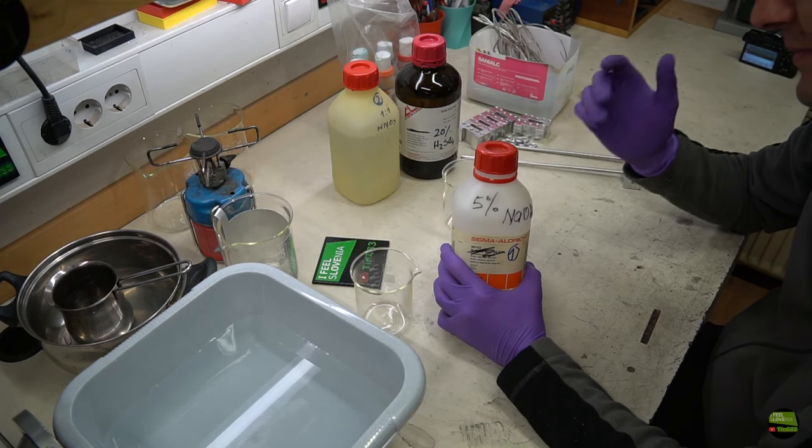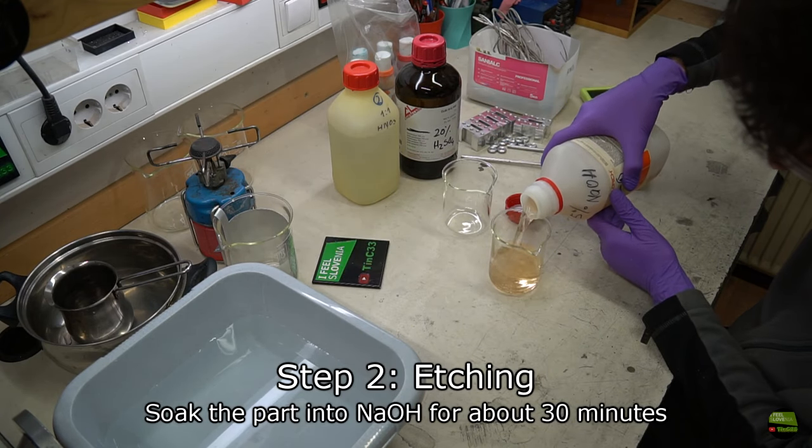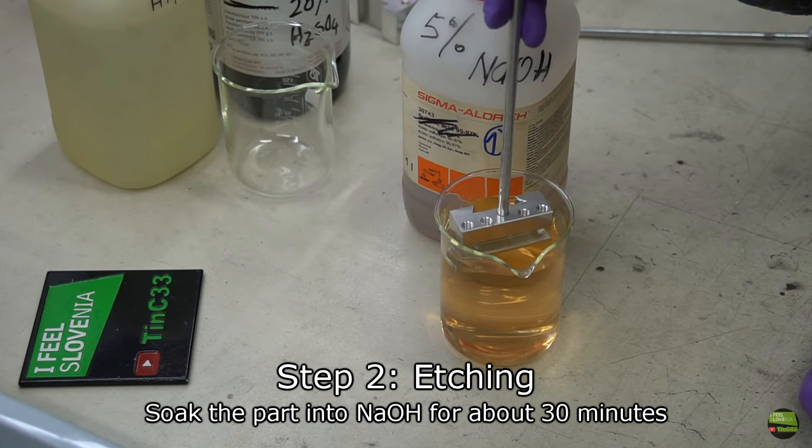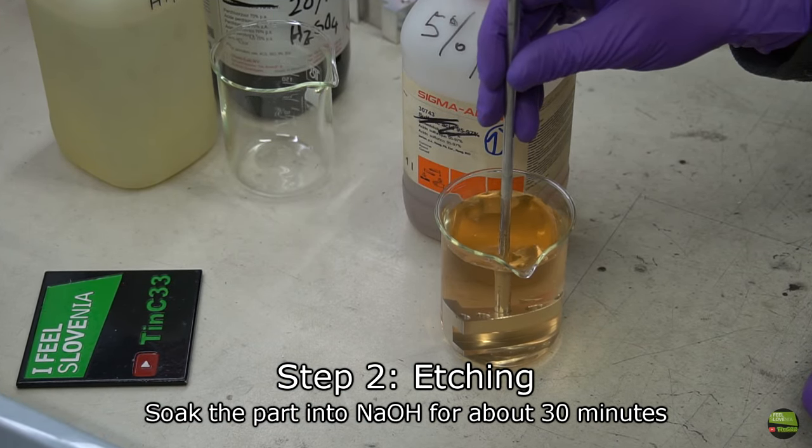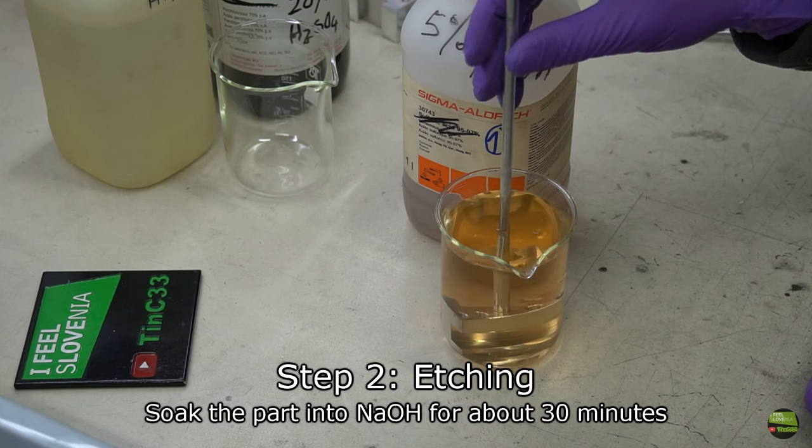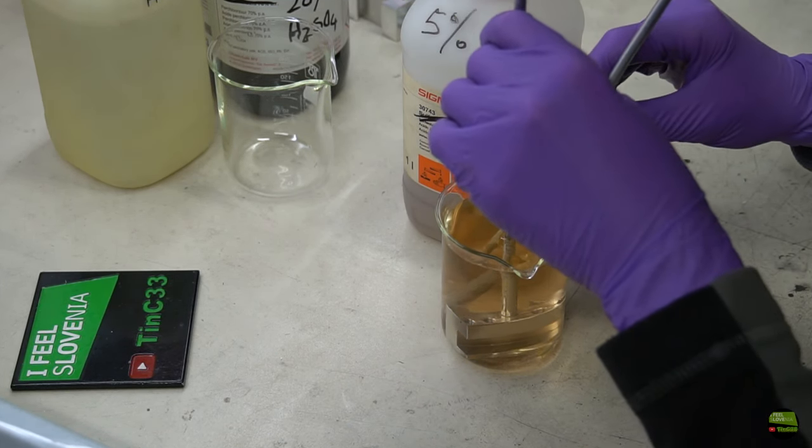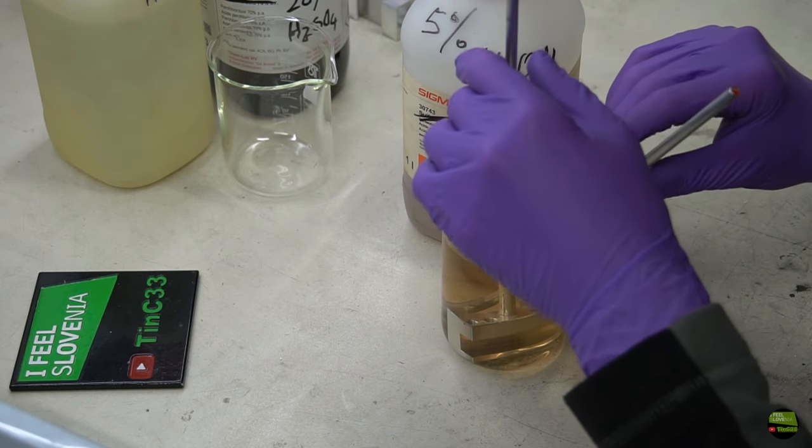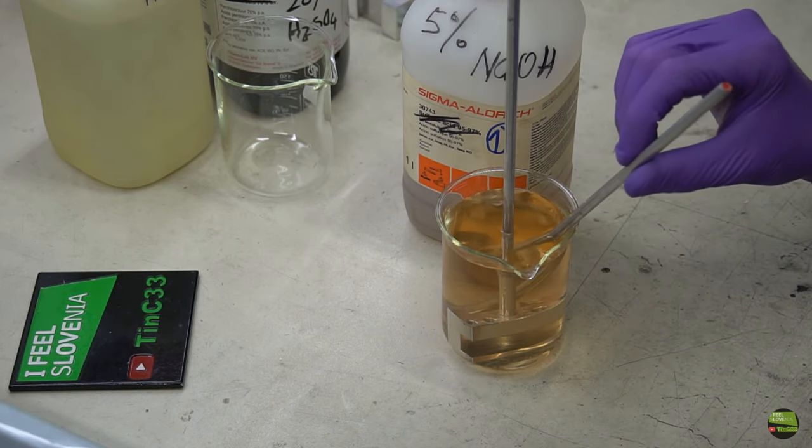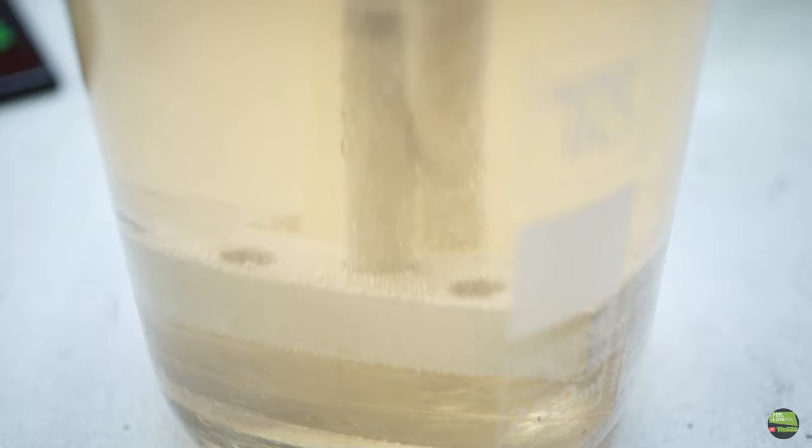Now the first step is to etch the part. To do that simply soak the part into 5% sodium hydroxide for about 10 to 30 minutes. It will clean the surface of aluminum. More time you soak in the acid, more aluminum will be etched. If you soak for too long, some small threads like M2 can be damaged, so smaller threads cut after anodizing.